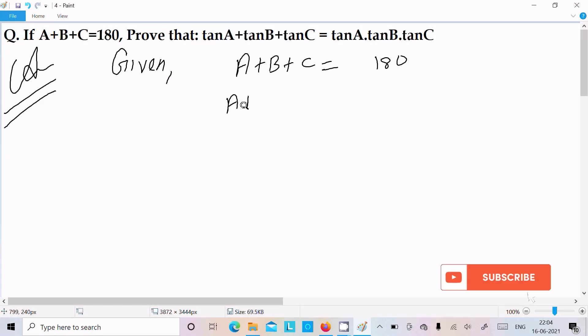Now we can write A plus B equals 180 minus C. Let's include the tan on both sides, so tan of A plus B equals tan of 180 minus C.